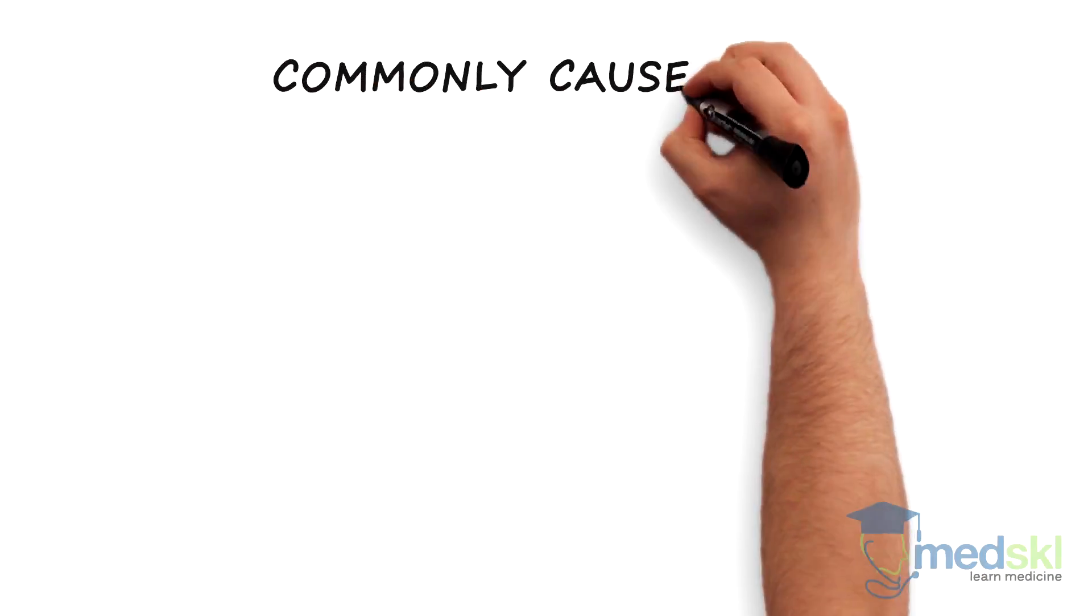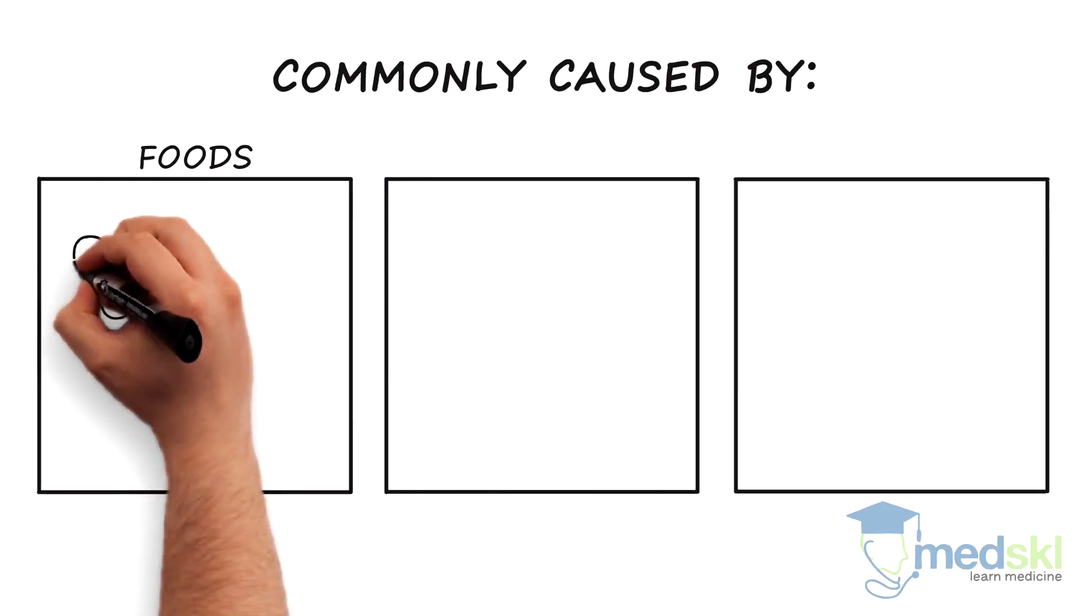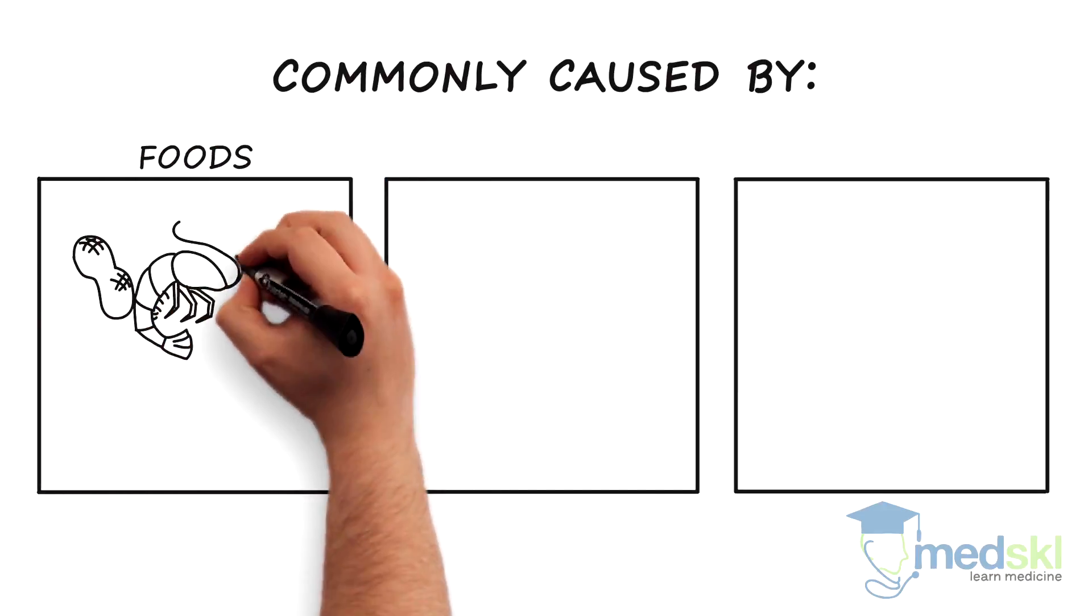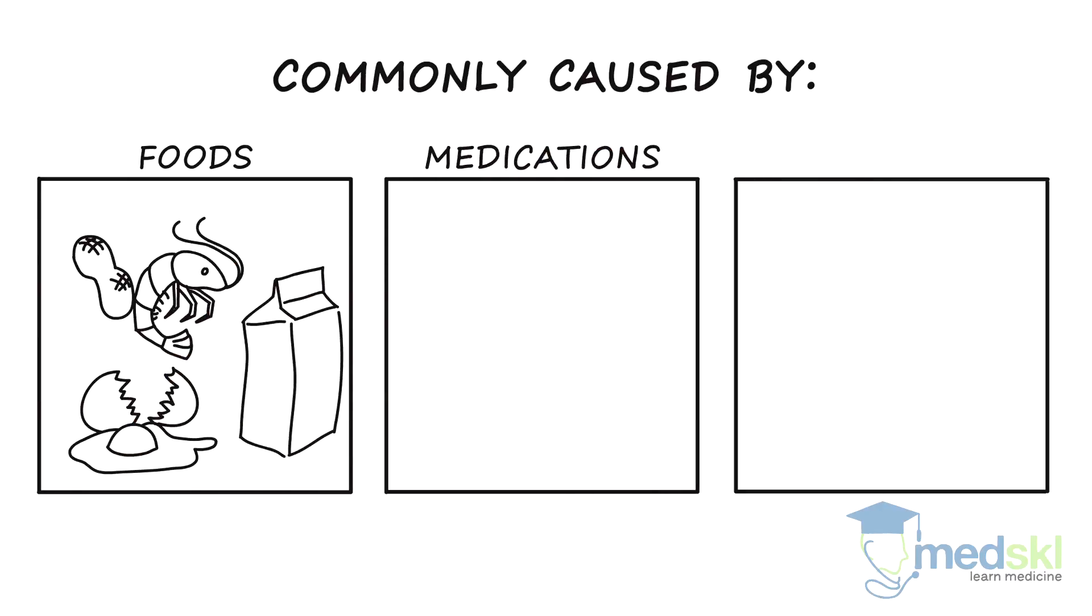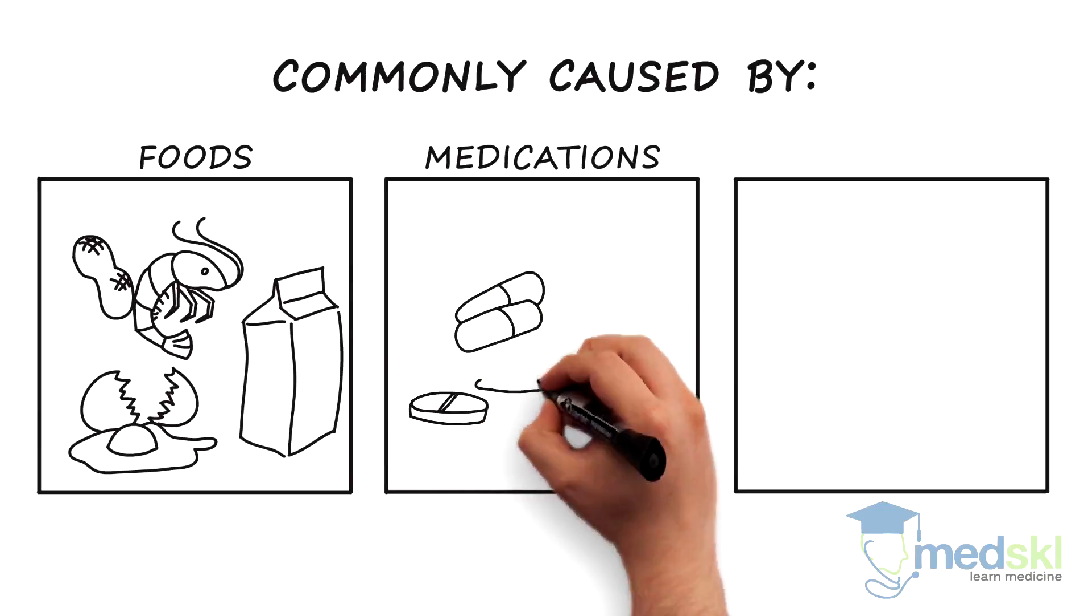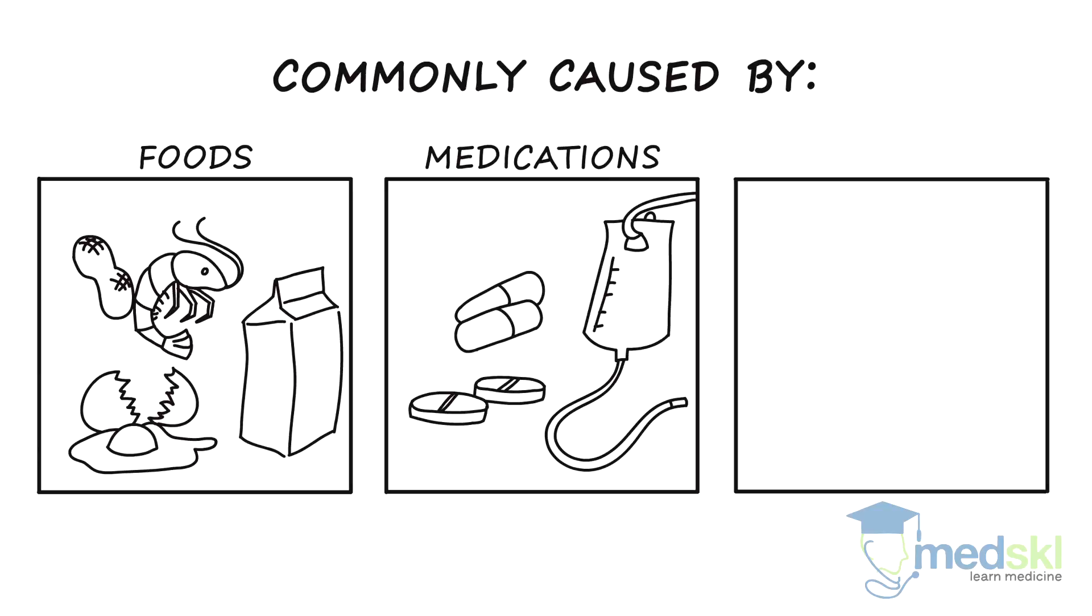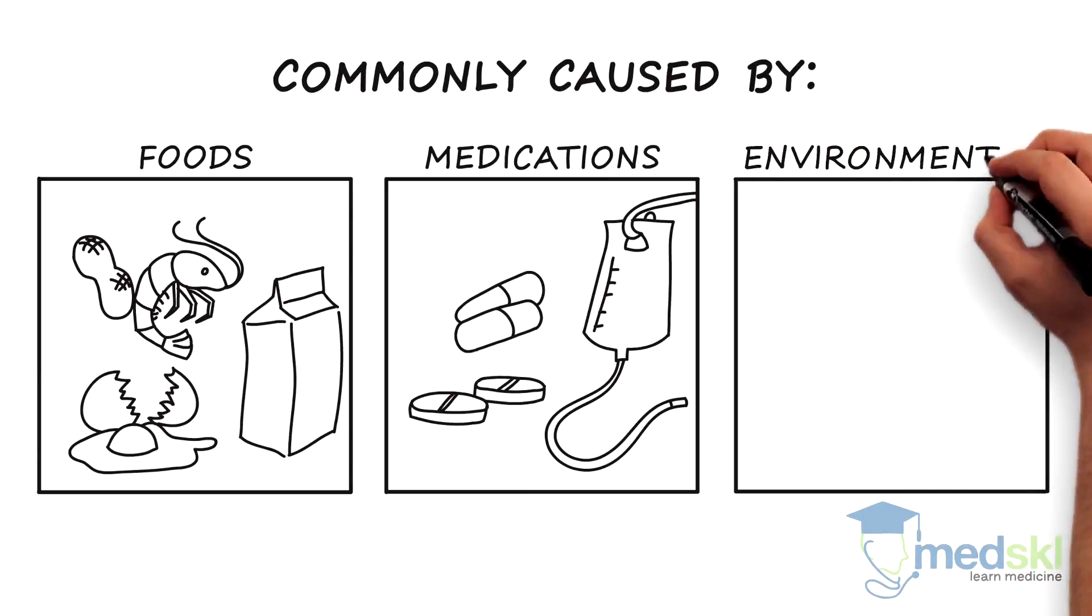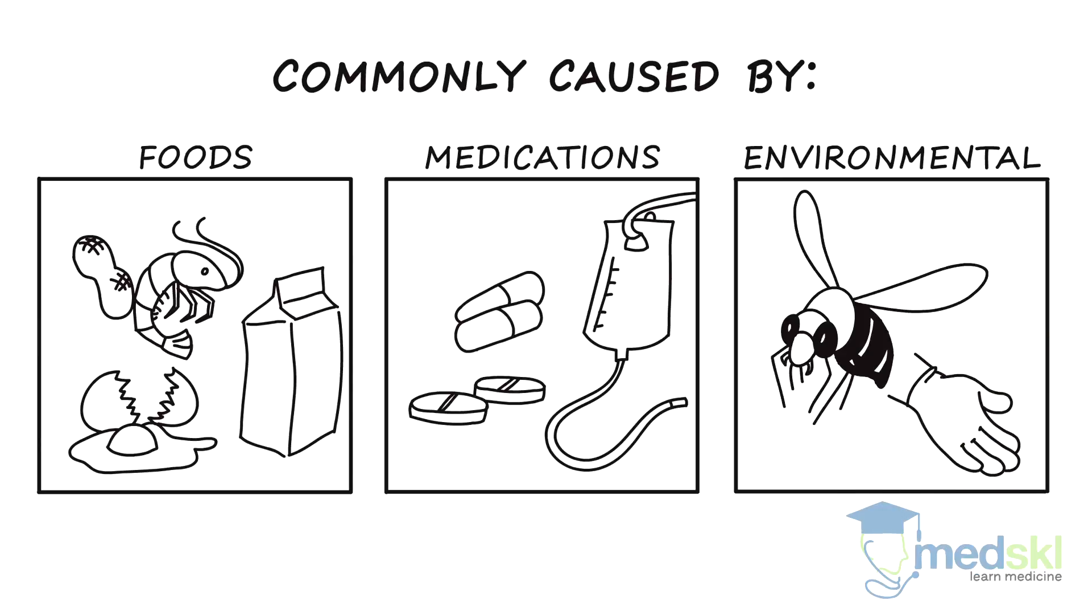Anaphylaxis is most commonly caused by one of the following three triggers: foods such as nuts, shellfish, eggs and milk, especially in kids; medications including antibiotics like penicillin and sulfa drugs, aspirin and IV contrasts used in diagnostic imaging procedures; and environmental things like insect stings from bees and wasps and latex.